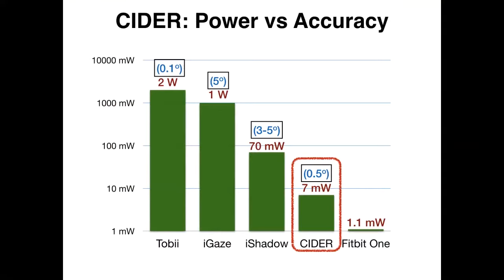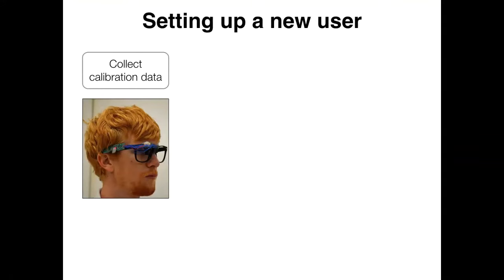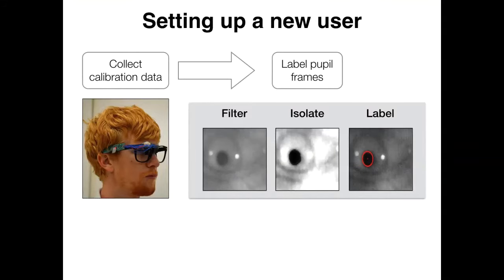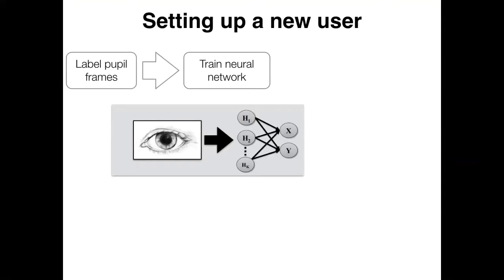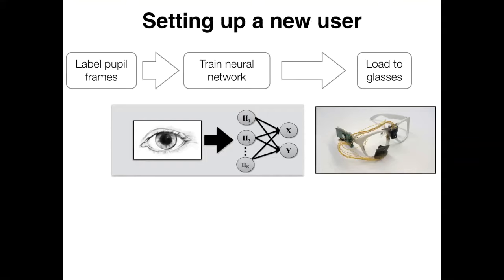Adding CIDR to the comparison, we succeeded in our goal: we brought power down another order of magnitude while increasing accuracy to be within a comparable range to devices like the Tobii, and now we're also within the standard power range for typical wearable devices. For setting up a new user: you start by collecting calibration data — a video of the person's eye moving around, either looking at a target or doing a normal task. You label the individual frames using software tools, then pass the images and labels into a neural network trainer. It builds the model parameters, and all you have to do is load those to the glasses.